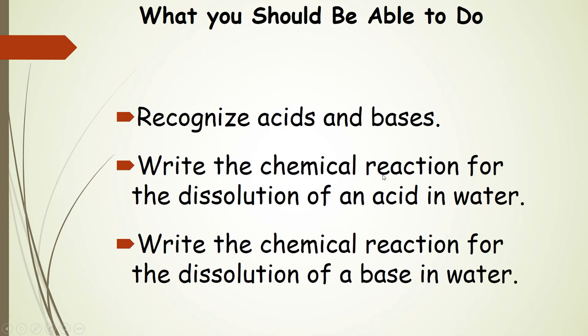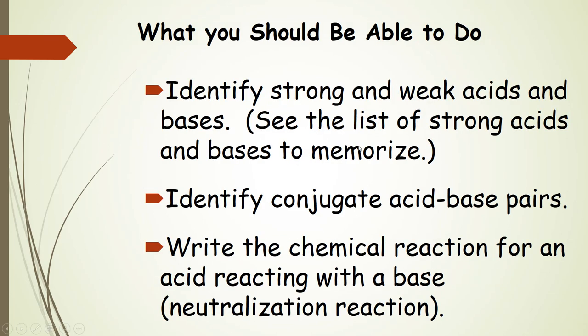So what should you be able to do with all of this? You should be able to recognize acids and bases and write out the chemical reaction for the dissolution of each in water. You should be able to identify strong and weak acids and bases — there is a list of strong acids and bases to memorize in your textbook and on Canvas. You should also be able to identify conjugate acid-base pairs and write the chemical reaction for an acid reacting with a base, which is a neutralization reaction.